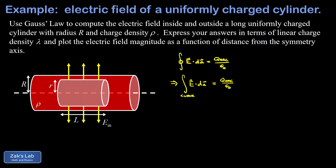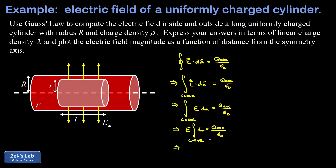We have the integral over the curved surface of E dotted into dA. Our electric field is perpendicular to that surface at every point, meaning parallel to the area vector which always points normal to the surface, so the dot product is trivial. When two vectors are parallel their dot product reduces to just the product of the two magnitudes, giving us the integral of E times dA over the curved part. Since the electric field magnitude is constant over that entire curved surface we factor E out of the integral, giving E times the integral of dA. Taking that integral gives us the area of the curved cylindrical surface: circumference 2 pi r multiplied by length L. So we end up with E times 2 pi r times L.